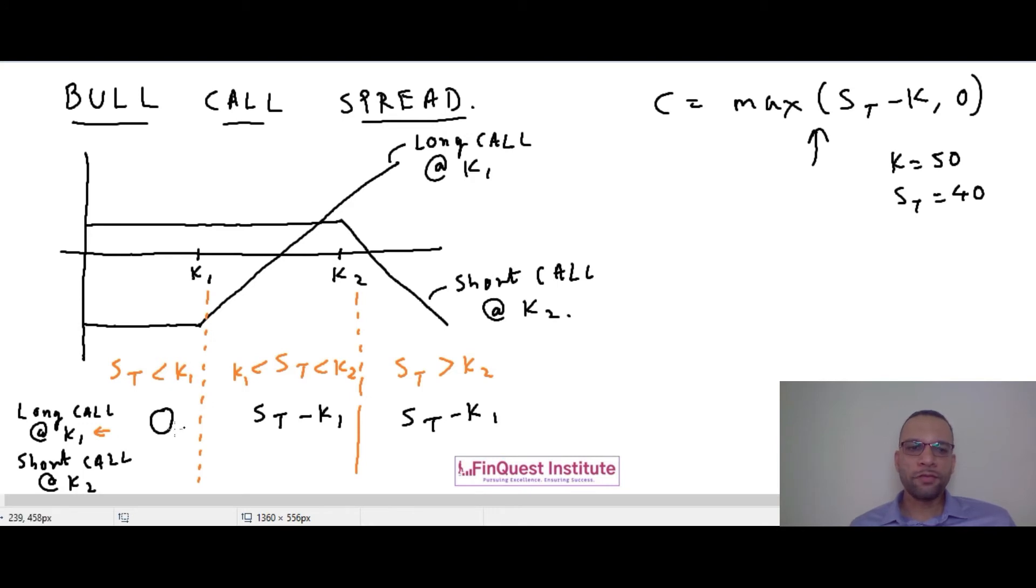Now let's take the second option which is a short call at K2. In the first scenario ST less than K1, the payoff is going to be zero using the similar logic which we studied for the earlier option. When the stock price is between K1 and K2, again this is going to be zero because this option has a strike price at K2, and if the stock price at maturity is less than K2 then the payoff would be zero. If the stock price is greater than K2, then this option is going to yield a payoff which will be given as ST minus K2.